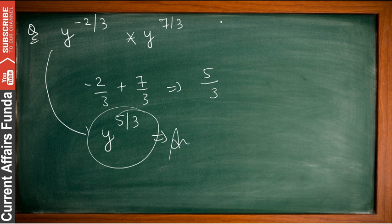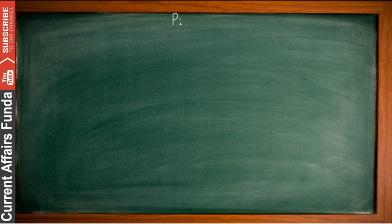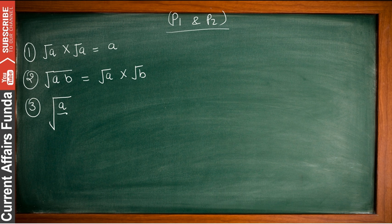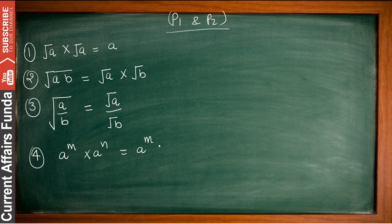There are certain rules discussed in Part 1 and Part 2. Keep these formulas written down. Formula 1: √a × √a × √a. Formula 2: √(ab) = √a × √b. Formula 3: √(a/b) = √a ÷ √b. Formula 4: a to the power m × a to the power n = a to the power (m+n). Formula 5: a to the power m ÷ a to the power n = a to the power (m−n).